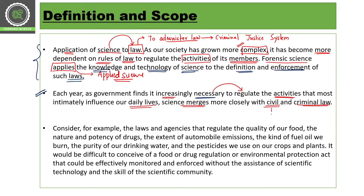Civil law covers less serious types of crime, including cases related to property, land disputes, and divorce cases. Criminal law, on the other hand, covers more serious offences such as murder and kidnapping — these are criminal activities, which is why they fall under criminal law.